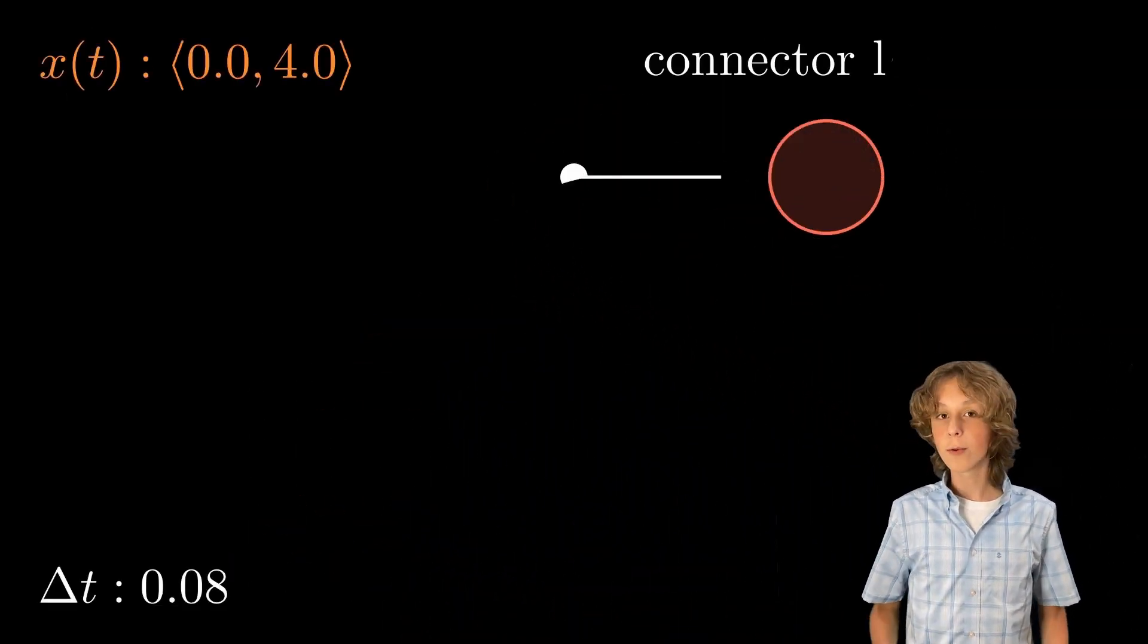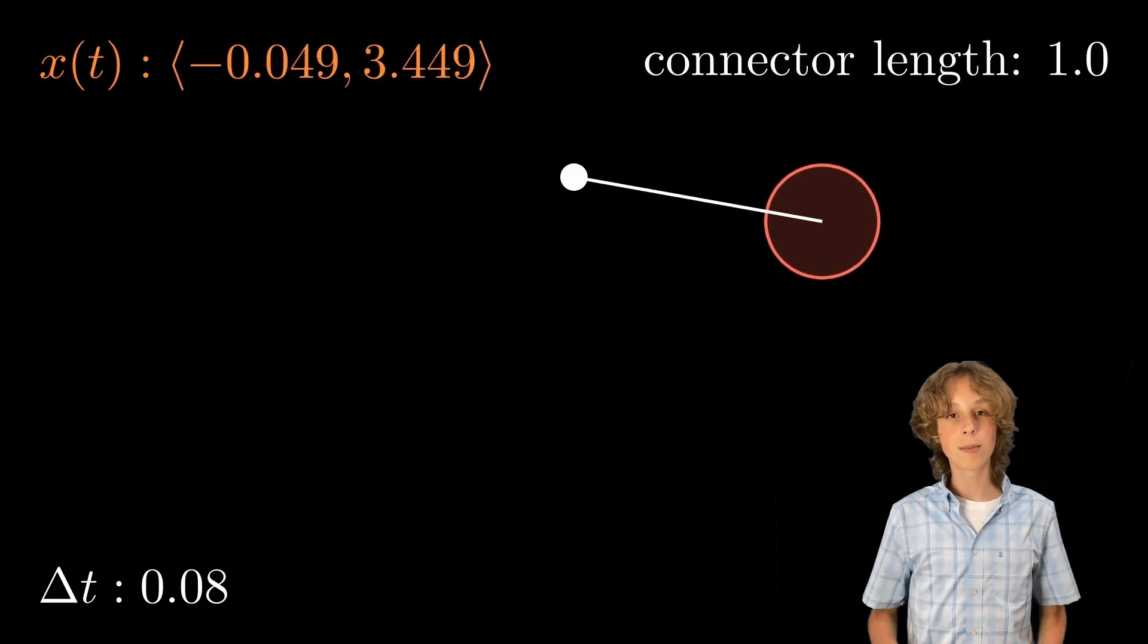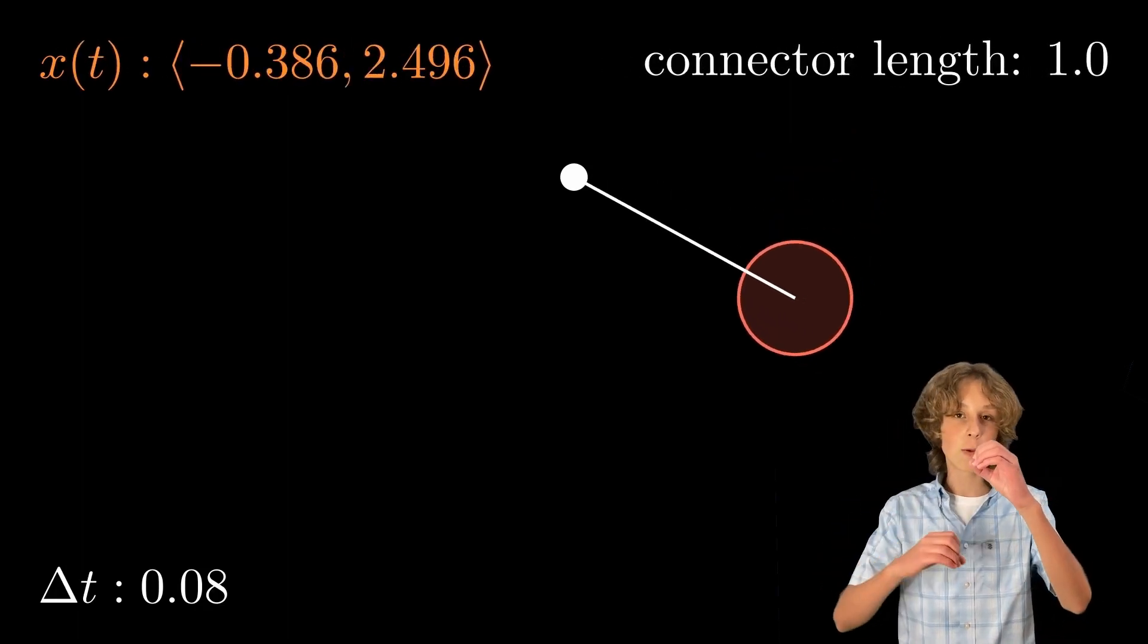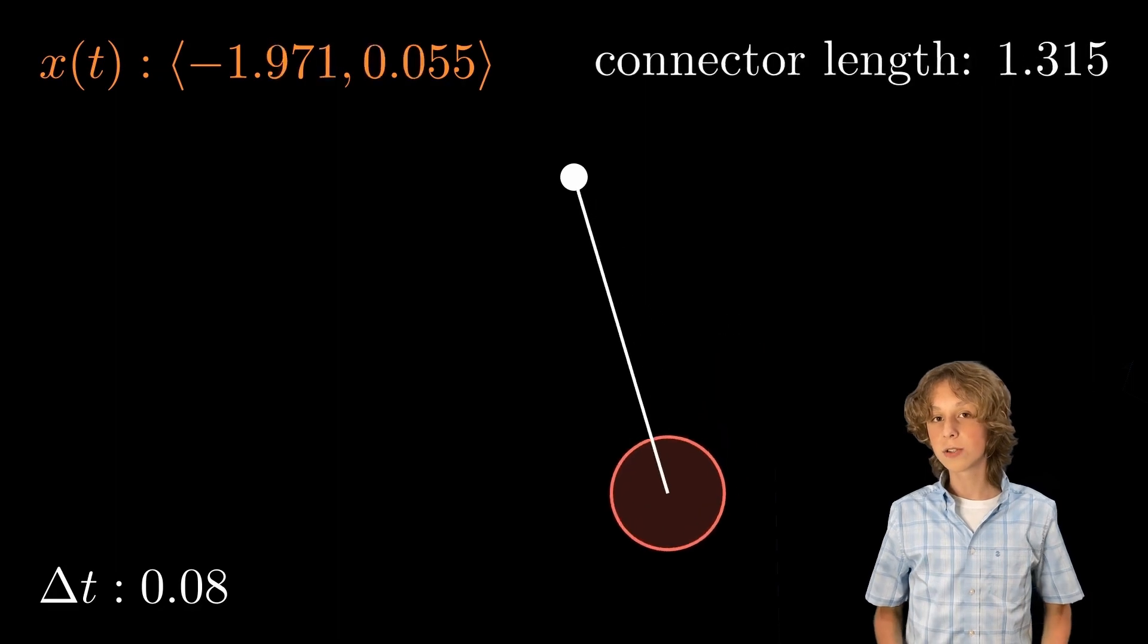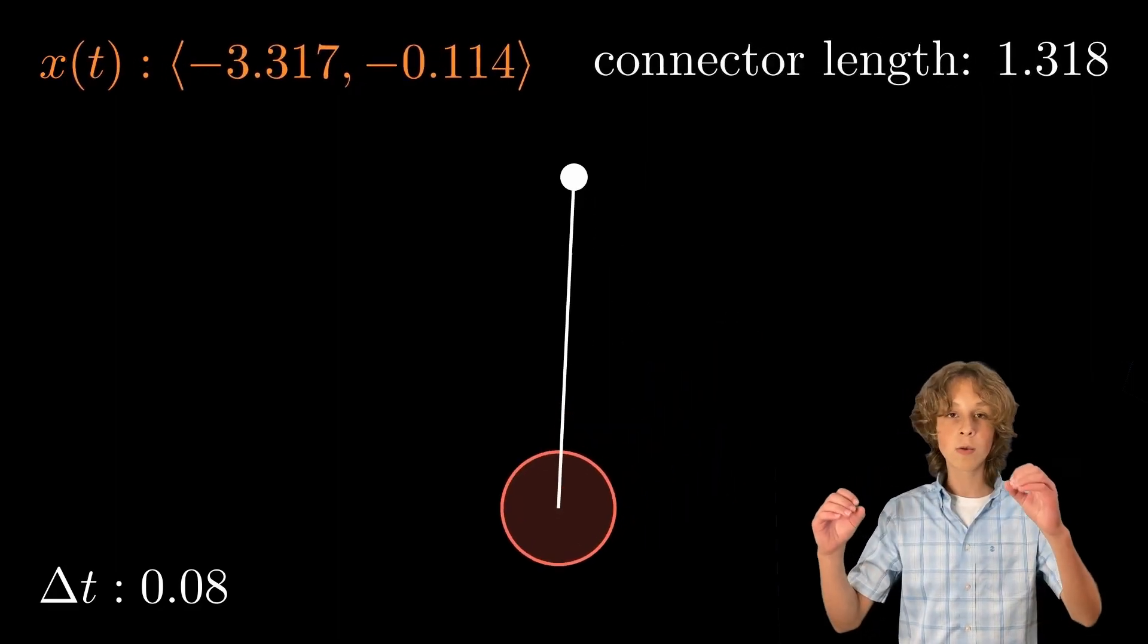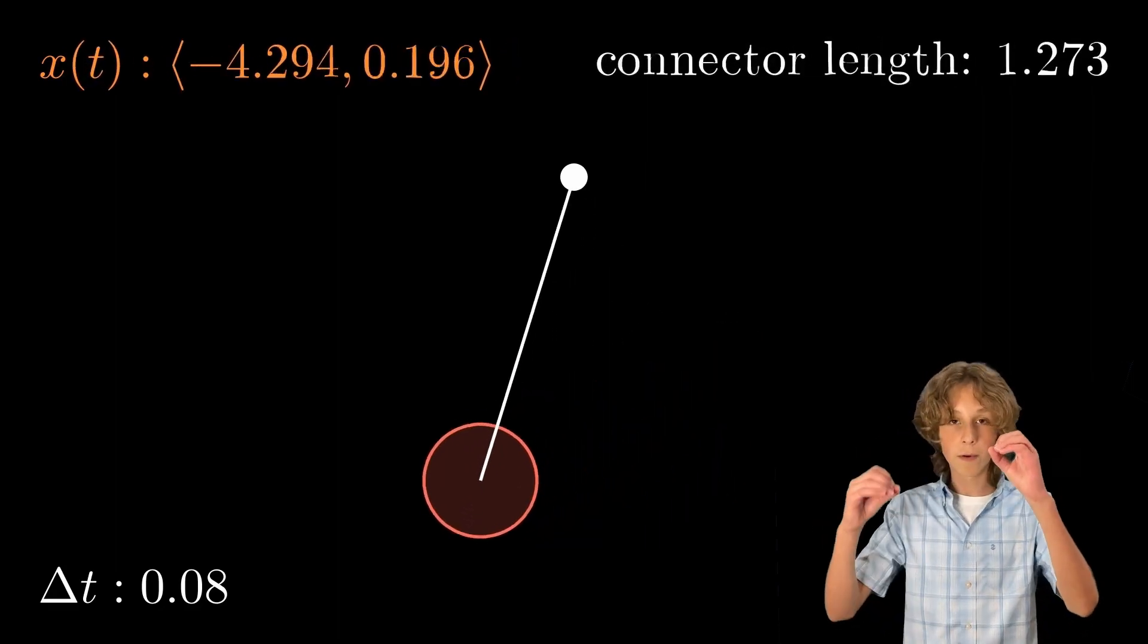Another thing that changes the motion of objects in this simulation is constraints. For example, we can simulate a pendulum by constraining a ball to a fixed distance away from a fixed point as it tries to fall. If the ball's position is greater than the fixed length away from the pivot, we move it closer. If it's less, we move it farther away.